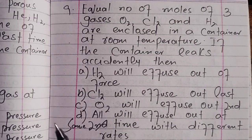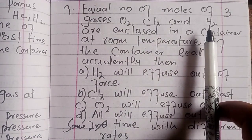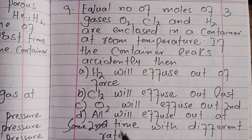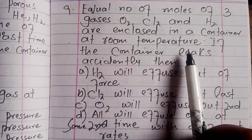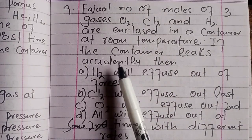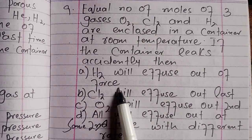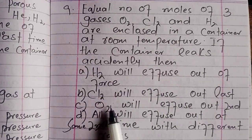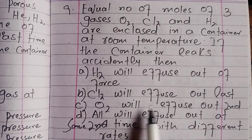Question 9: Equal number of moles of three gases — oxygen, chlorine, and hydrogen — are enclosed in a container at room temperature (25 degrees Celsius). If the container leaks accidentally, which gas will effuse out first? Hydrogen will effuse out first, chlorine will effuse out last, and oxygen will effuse out at the same time but at different rates.